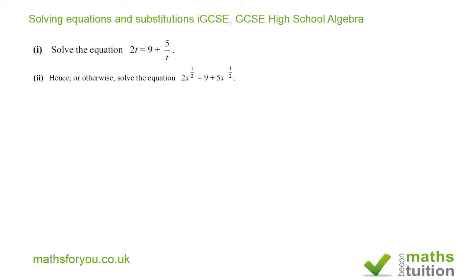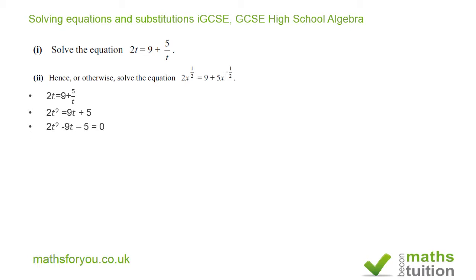For the first one, we write the equation as given: 2t is equal to 9 plus 5 over t. If we multiply every term by t, we end up with 2t squared is equal to 9t plus 5. If we then subtract 9t and 5 from both sides, we end up with 2t squared minus 9t minus 5 is equal to 0.